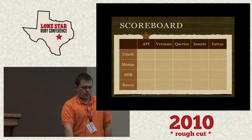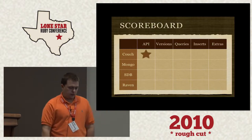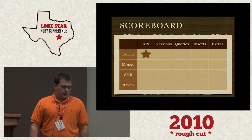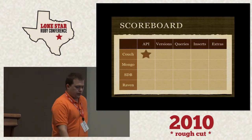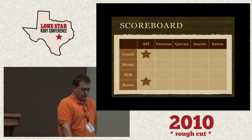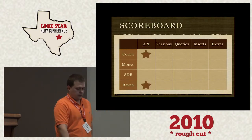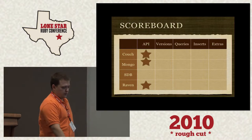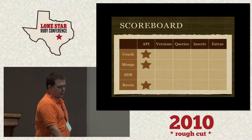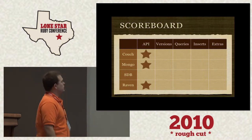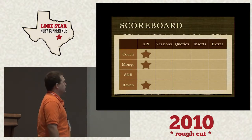So our scoreboard for APIs: CouchDB gets a star, RavenDB gets a star, MongoDB gets a star. There's no star for SimpleDB.